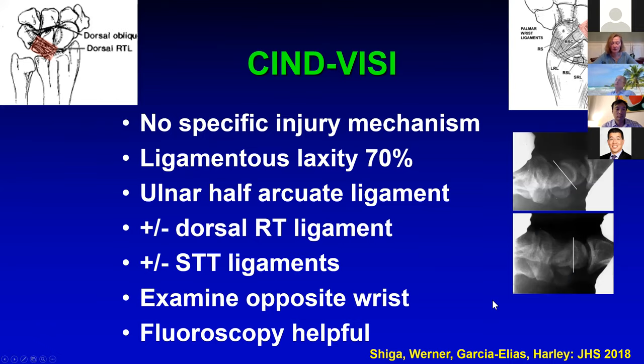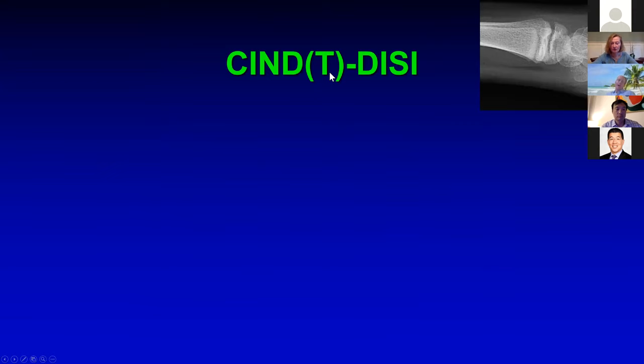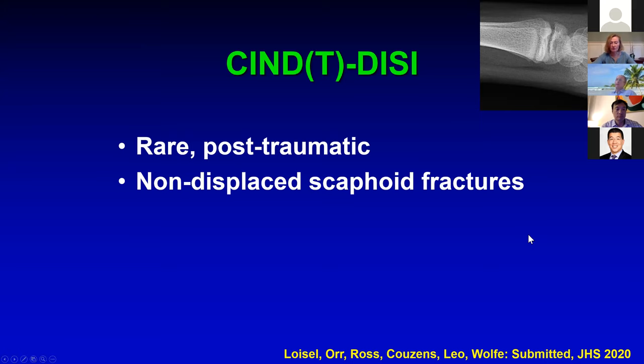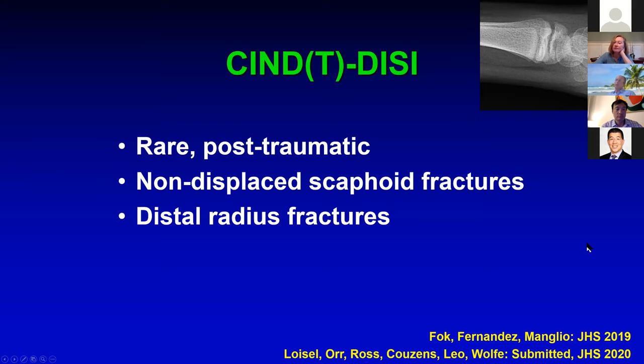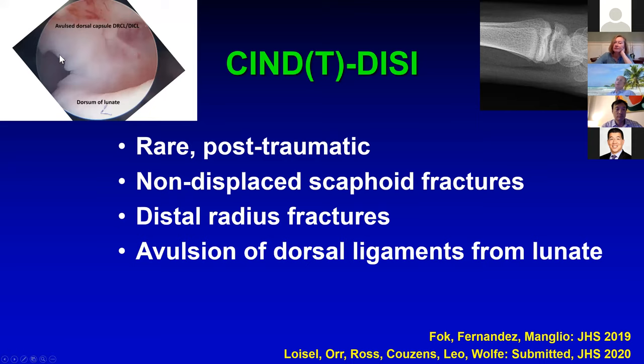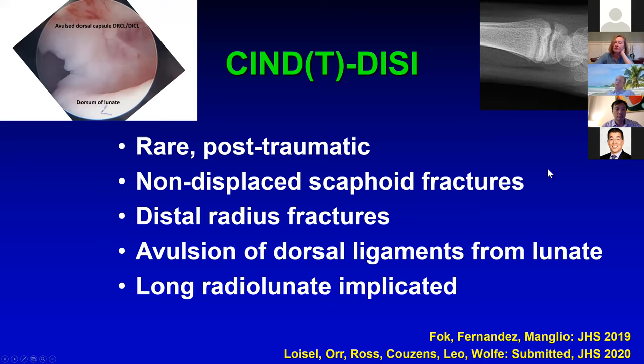CIND-DISI is really, really rare and usually traumatic. We now call this CIND-DISI-T or traumatic. It happens after non-displaced scaphoid fractures — we have submitted this article to the Journal of Hand Surgery — and also after distal radius fractures, as Fernandes and Folk published last year. Look for it — if you're not aware of it, you'll miss it. This is an avulsion of the entire dorsal ligament complex off the lunate, which allows the lunate to tip up into DISI. If you don't catch it acutely, it becomes chronic and unrepairable.